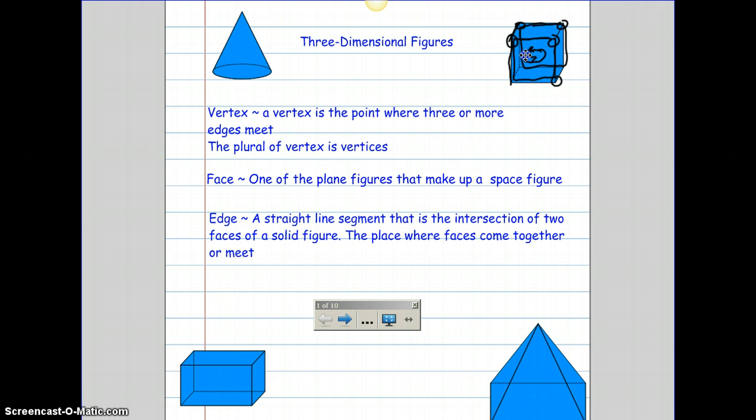Next we have edge. Edge is a straight line segment that is the intersection of two faces of a solid figure. The place where faces come together or meet. Here is a face and here is a face. Where those two faces meet is this edge. Here's a face and here's a face. And this is another edge.